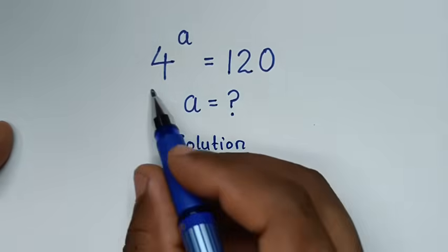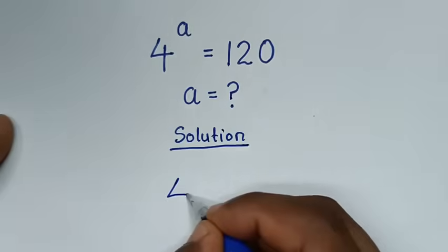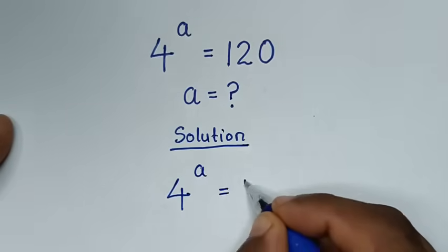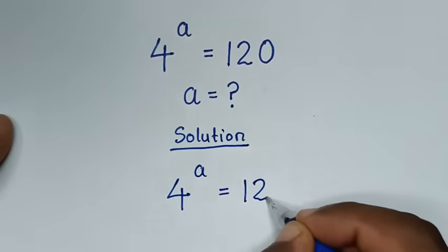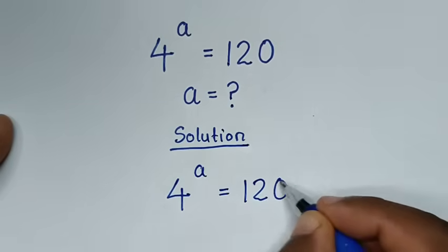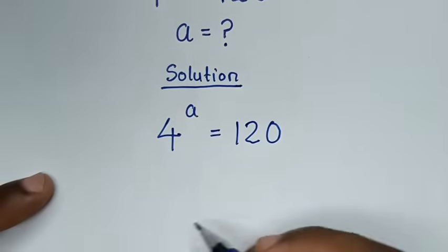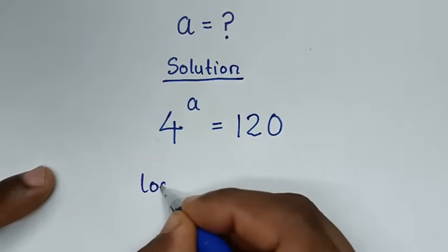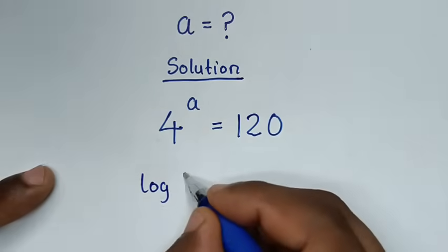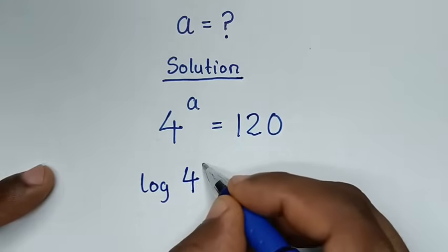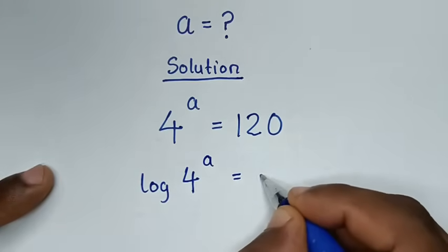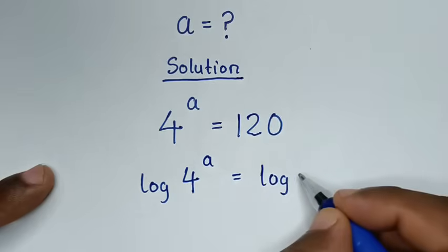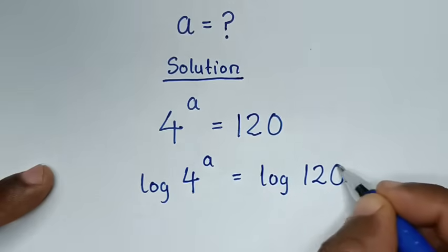From our problem here, which is 4 power of a is equal to 120, in the first step we'll apply log to both sides. So it will be log of 4 power of a is equal to log of 120.